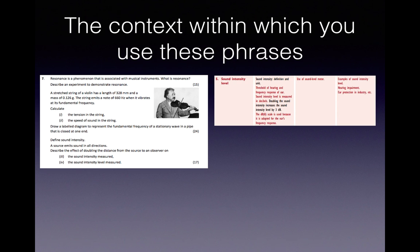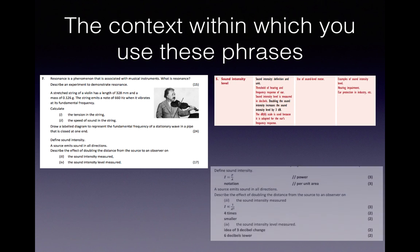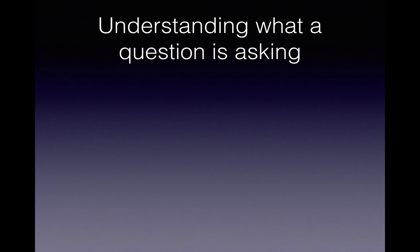Now you have to use the formula there and the black text which says doubling the sound intensity increases the sound intensity level by three decibels to answer the question. So you could attempt the question then and then go to the marking scheme and see have you correctly interpreted the syllabus via the exam question.